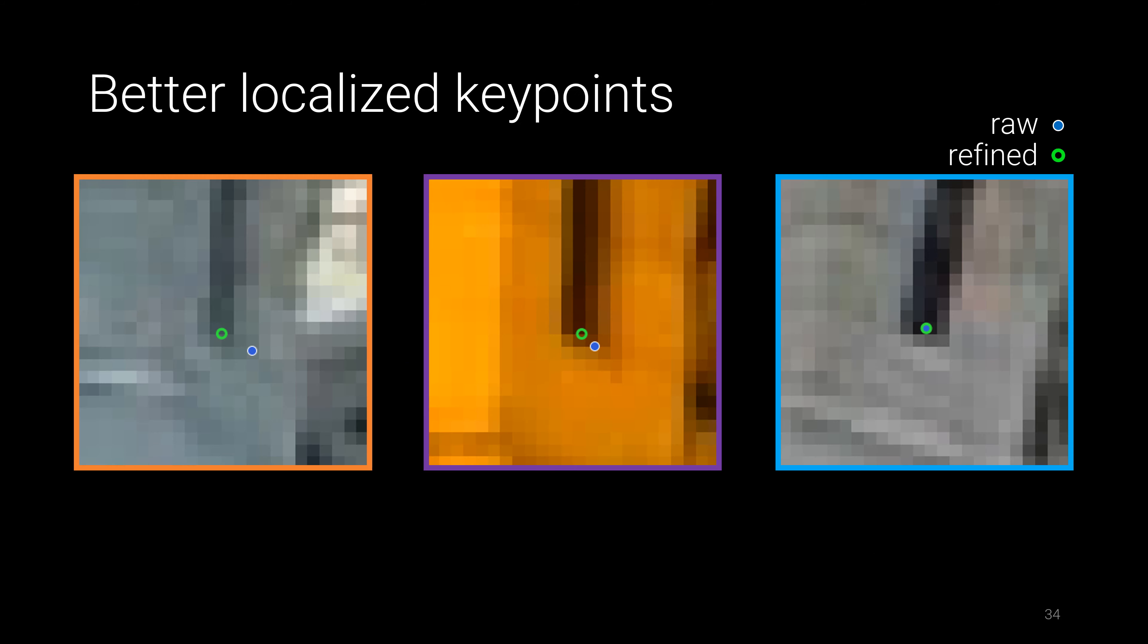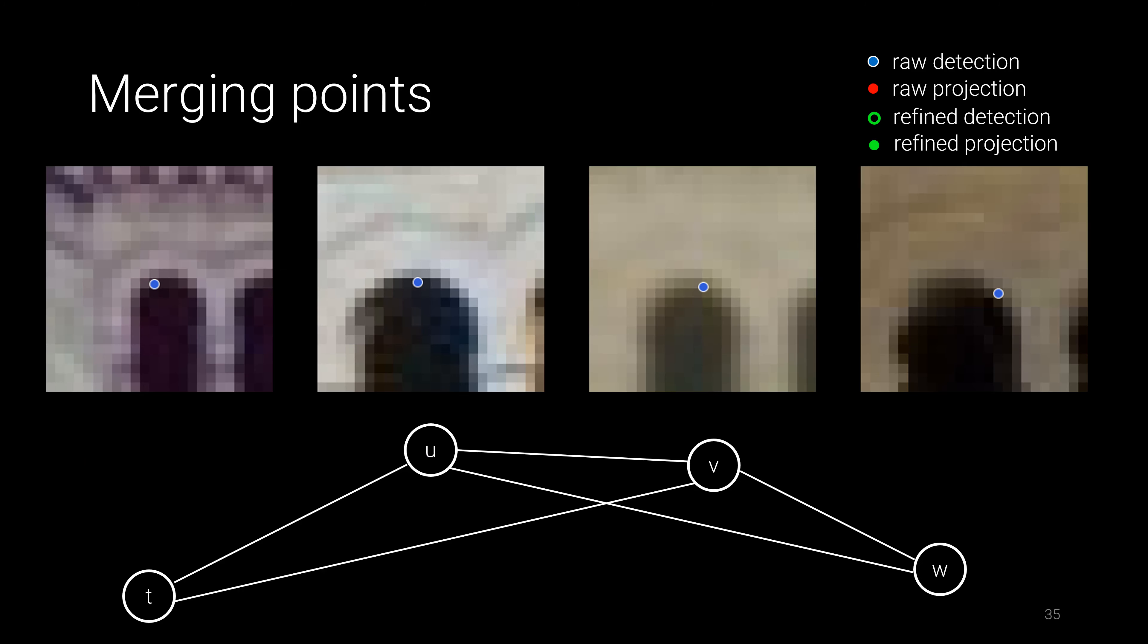Featuremetric keypoint adjustment results in better localized features across multiple views, effectively reducing the noise of keypoint detectors and increases both the track length and overall number of triangulated points in the reconstructed model.